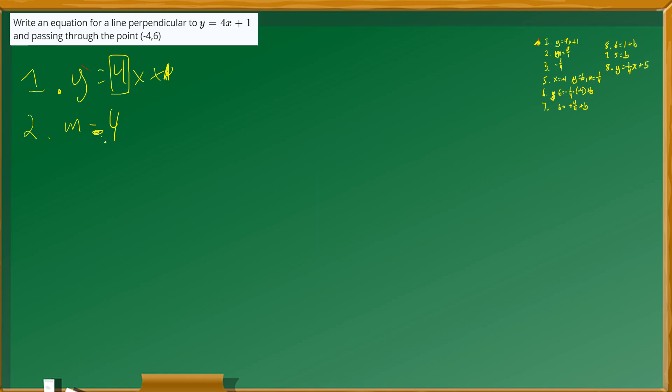When you form the equation of the perpendicular line, you need to have the reciprocal, that is the negative version of this. So I'm going to put it as follows. I'm going to say here m sub p for perpendicular will be equal to negative 1 fourth.